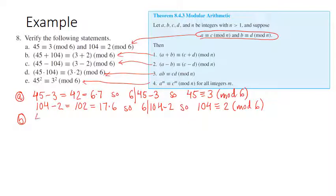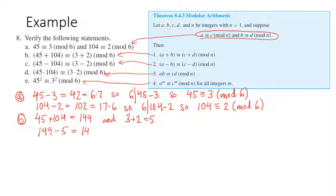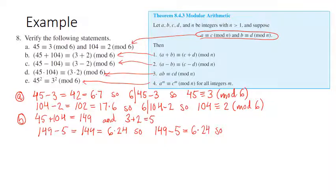45 plus 104 is 149, and on the other side 3 plus 2 is 5. Is 149 congruent to 5 mod 6? 149 minus 5 is 144, and 144 is 12 times 12, which is 6 times 24. So this difference is a multiple of 6, meaning 149 is indeed congruent to 5 mod 6.